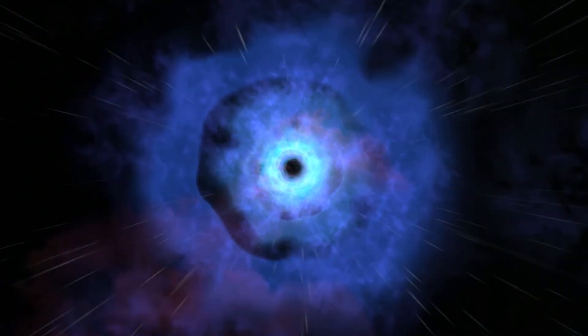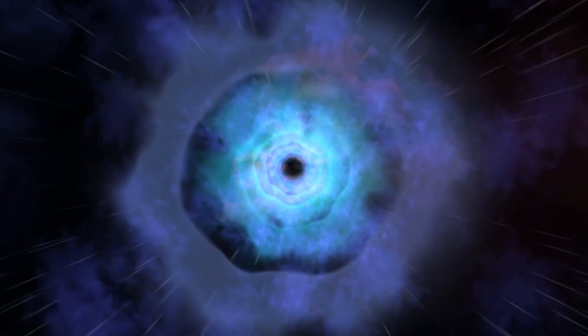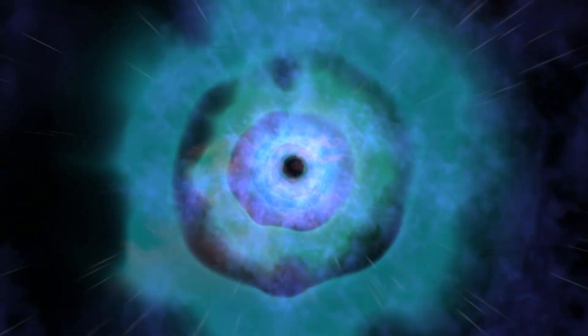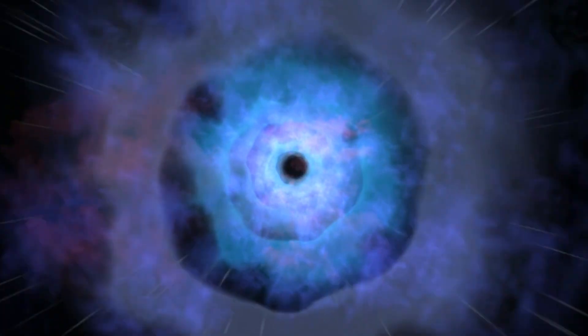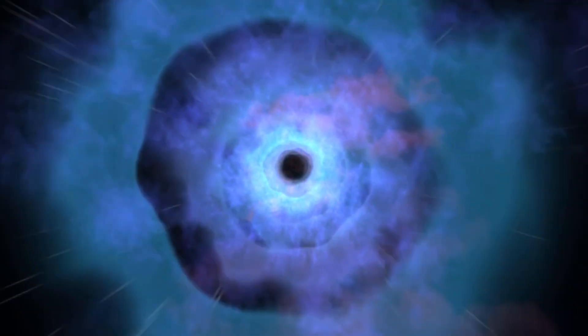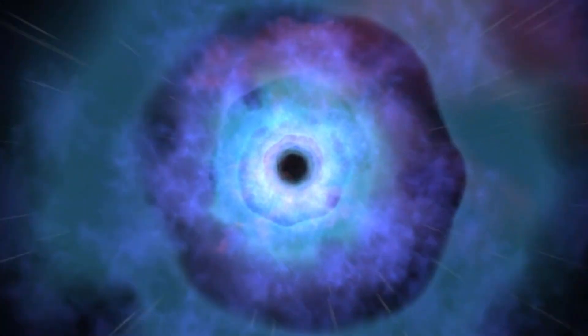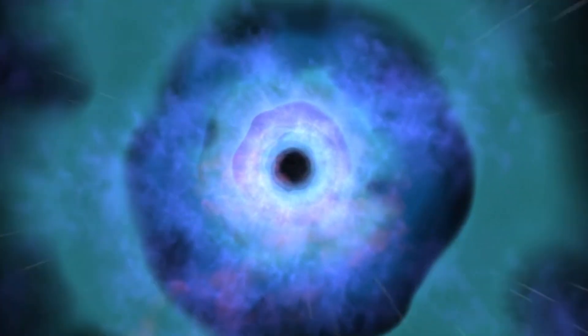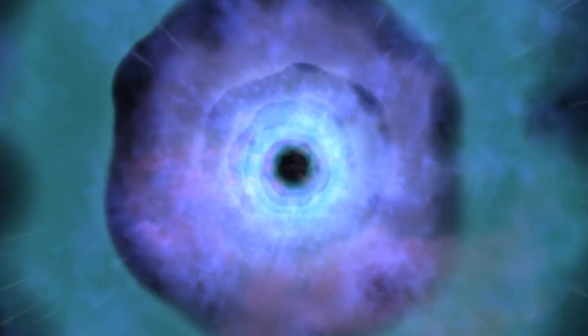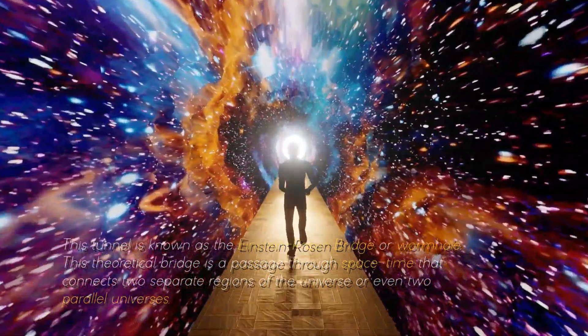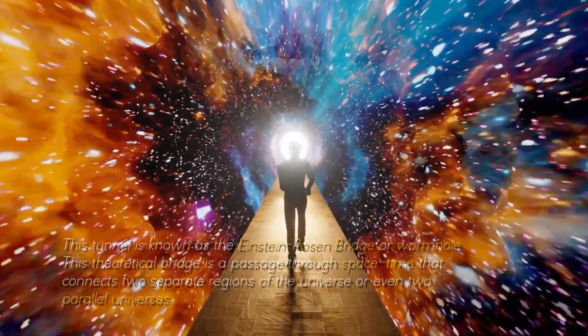You're probably wondering what lies beyond the third layer called the singularity, right? The idea is that, instead of being crushed by falling into a black hole, one would be sucked through a tunnel through the ring of fire and emerge through a white hole somewhere else in a parallel universe. This tunnel is known as the Einstein-Rosen Bridge, or wormhole.